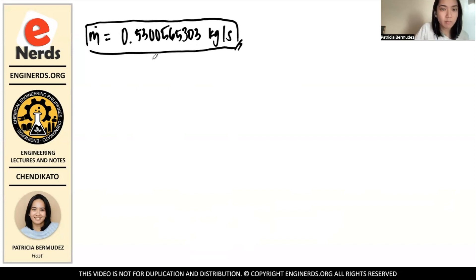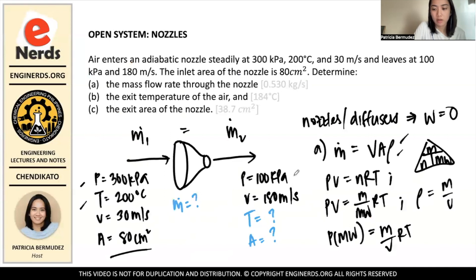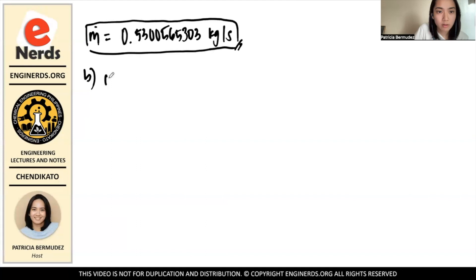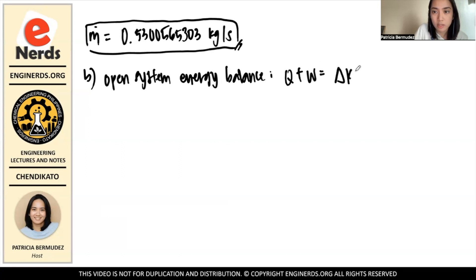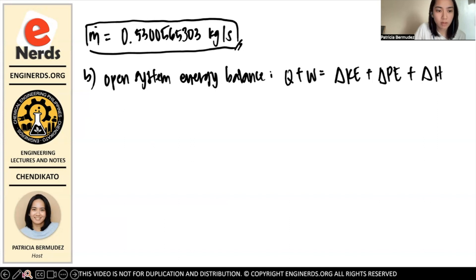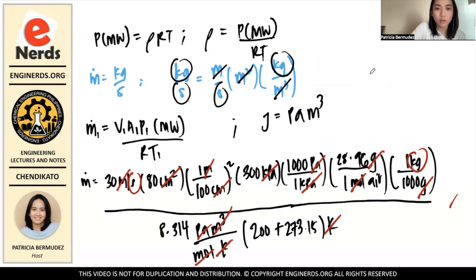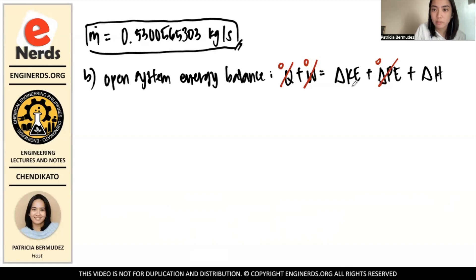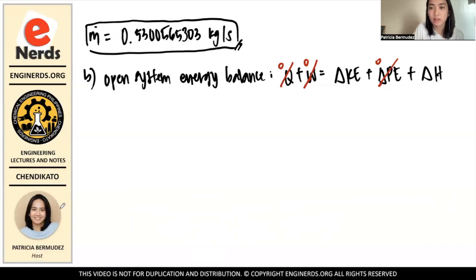For the second part of the problem, we need to find the exit temperature of the air. For an open system energy balance: Q + W = ΔKE + ΔPE + ΔH. In this problem, the nozzle produces no work, so W = 0. It's adiabatic, so Q = 0. There is a velocity change, so there is a change in kinetic energy. But there is no change in height given, so potential energy is 0. We are left with kinetic energy and enthalpy, where ΔH = Cp × ΔT.